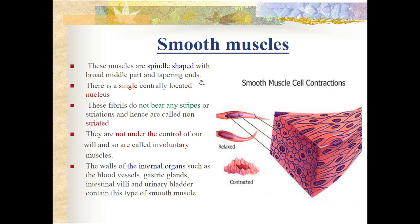Smooth muscles are spindle-shaped with a broad middle part and tapering ends, with a single centrally located nucleus. These fibers do not bear any stripes and so are called non-striated. They are not under the control of our will and so are called involuntary muscles. The walls of internal organs such as blood vessels, gastric glands, intestinal villi, and urinary bladder contain this type of smooth muscle.